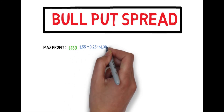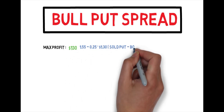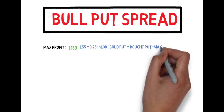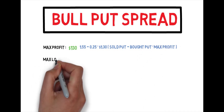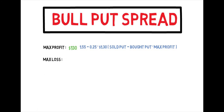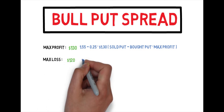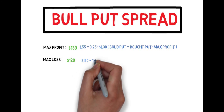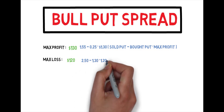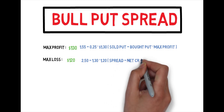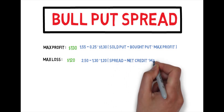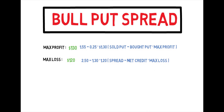Now let's go over your max loss. Your max loss is a little bit trickier to get, but not that hard. What you do is you basically take the spread between your two strike prices. One was $15 and one was $12.50. The difference between that is $2.50. You take that number and subtract it by your net credit, which is $130. So $250 minus $130 is $120. So your max loss is going to be $120.